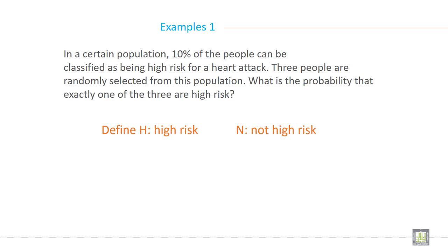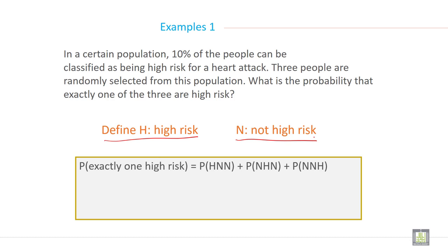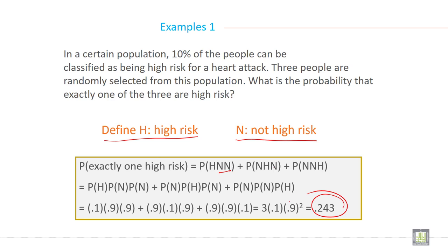Define H equals high risk and N not high risk. Probability of exactly one high risk equals probability of H, N, H plus probability of N, H, N plus probability of N, N, H. So probability of H multiplied by probability of N multiplied by probability of N. If you calculate it will be 0.243.